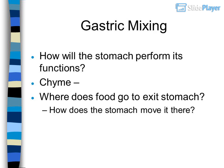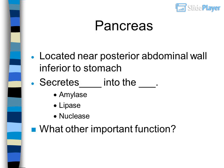Gastric regulation is produced regularly, but the rate can vary. Gastrin — what stimulates its release? What might cause it to vary? Gastric mixing — how will the stomach perform its functions? Chyme — where does food go to exit the stomach, and how does the stomach move it there?